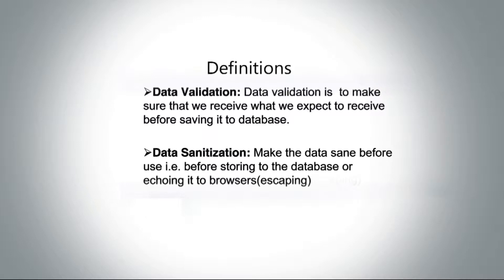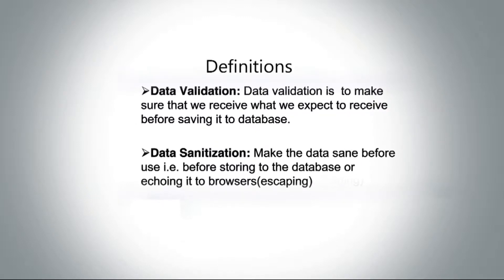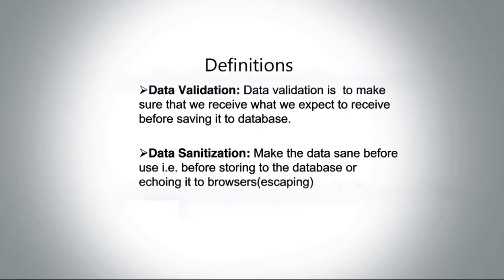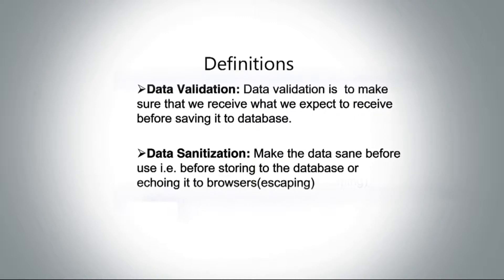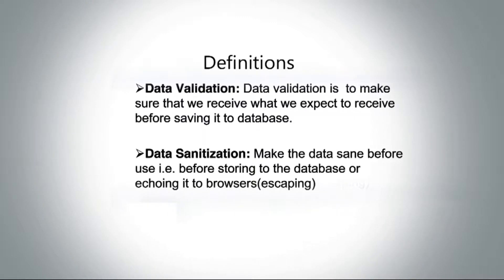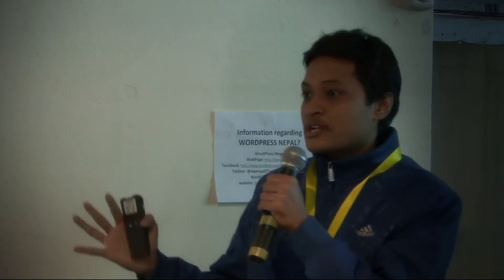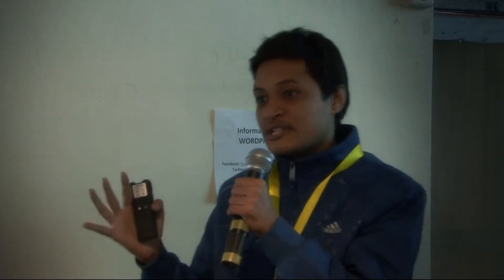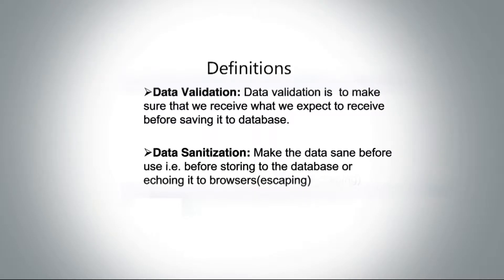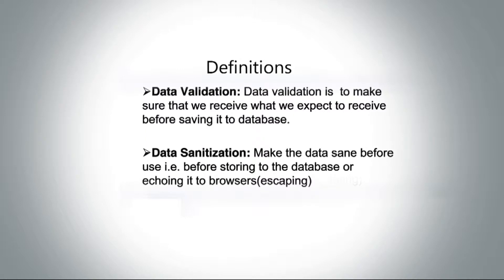Here is the definition part. What actually is data validation? Data validation is making sure that we receive what we expect to receive. It is a process by which you ask the user to give you some data, and you check whether the data is correct, whether the data type is right, whether the data size is right. If the data is in the correct format and the data type is all good, you accept the data and save it to the database. That's data validation.